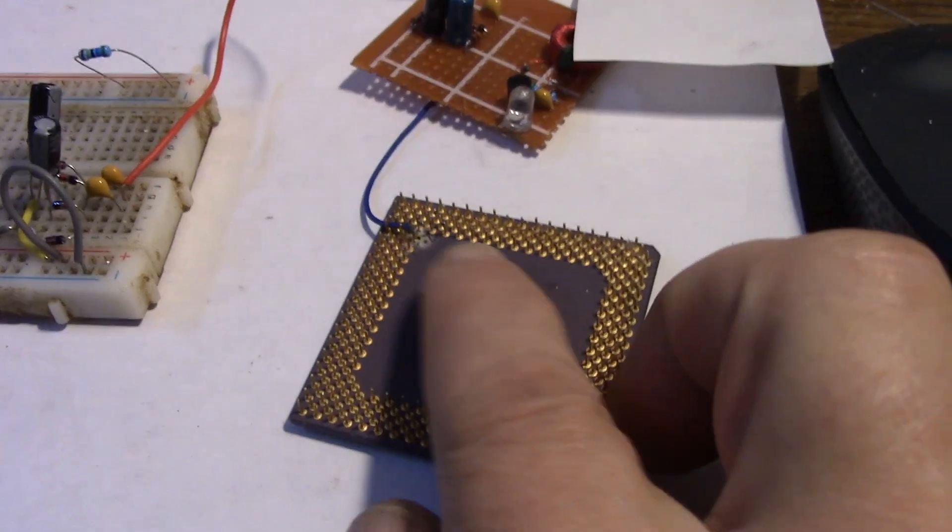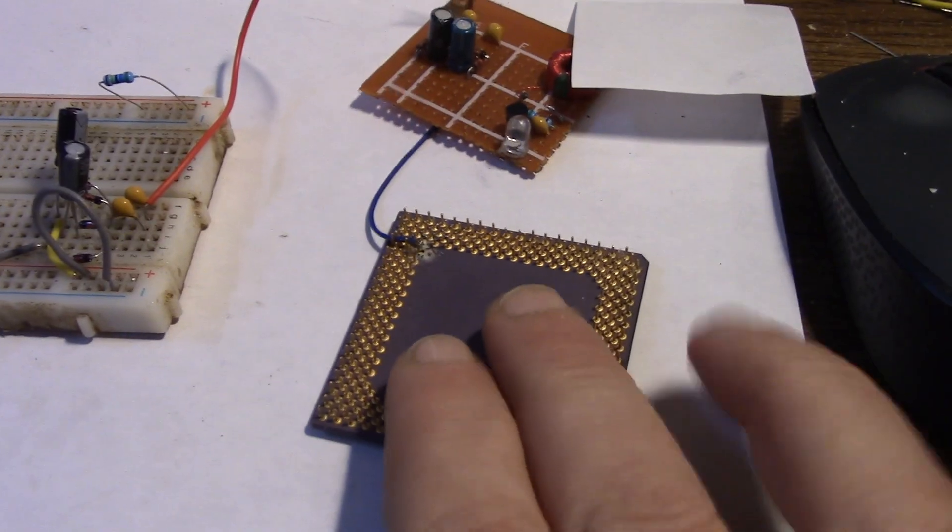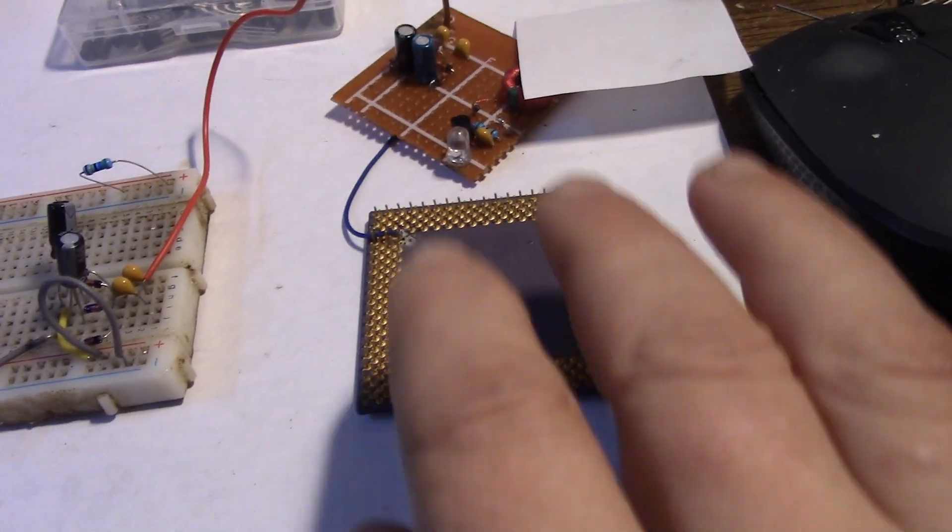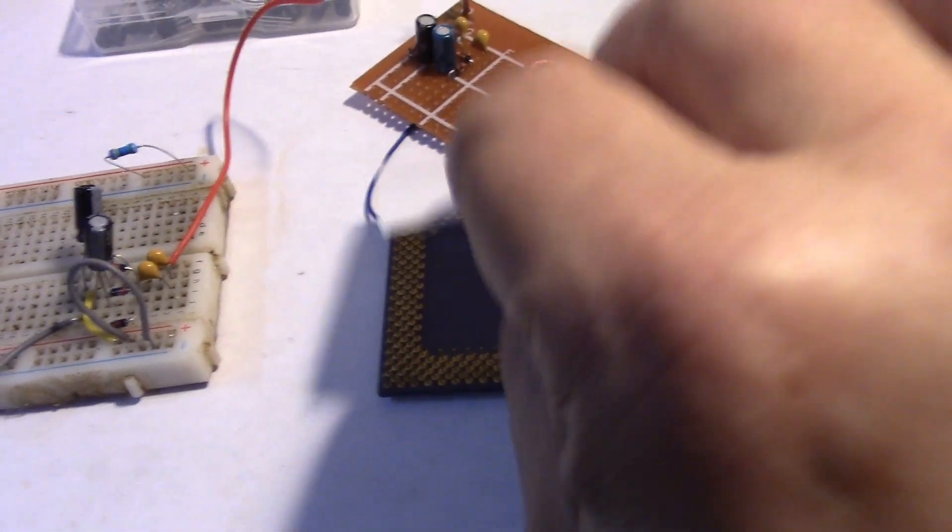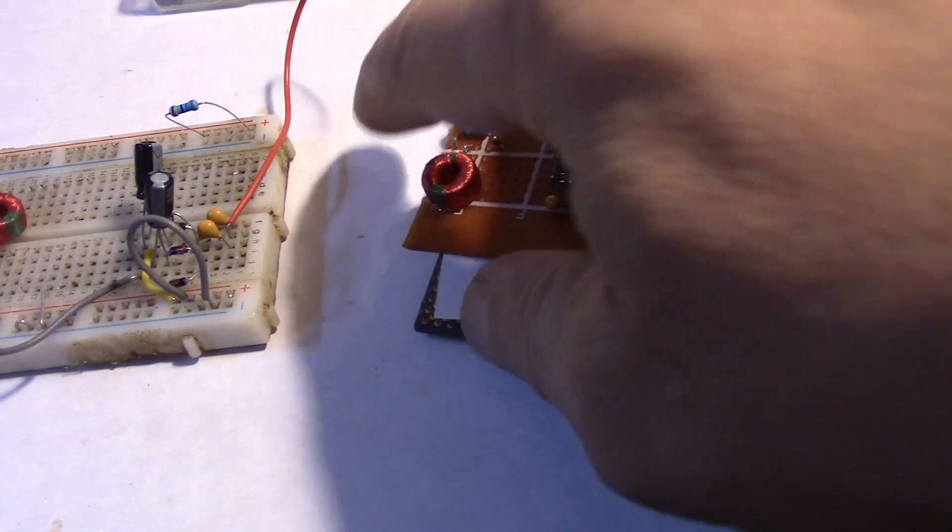But what I found out was, if I soldered to one of the pins, for some reason, this was working like a big piece of metal, just the same as that really. And a piece of metal would do the same, but I just thought it was cool to use an old chip. Anyway, so then, as I say, a piece of paper, as a kind of separator for electrical connections, and then this circuit, on top.